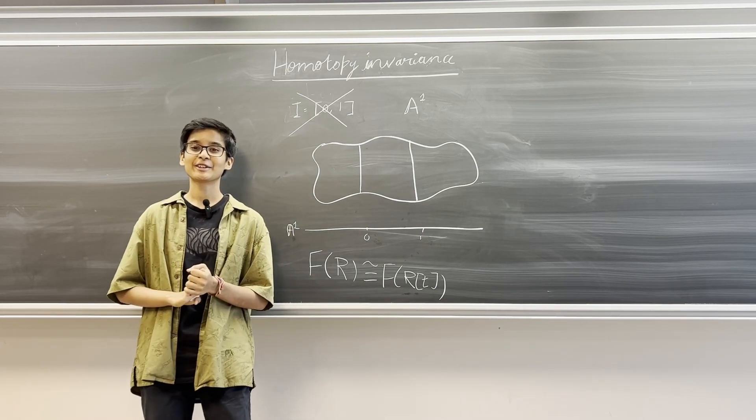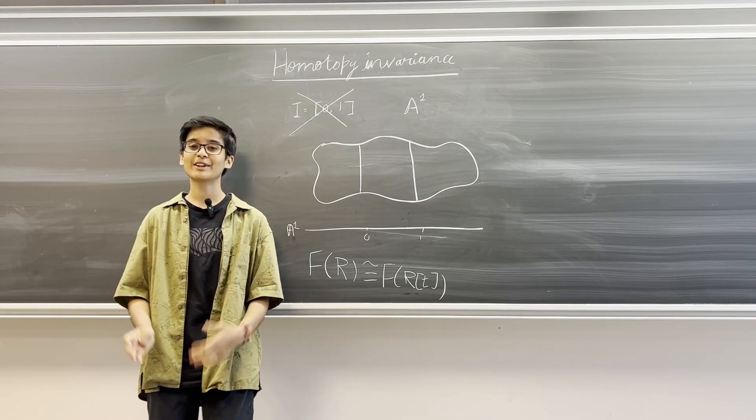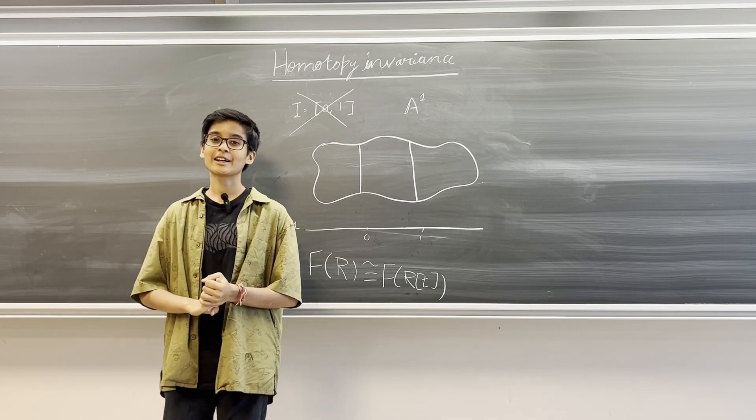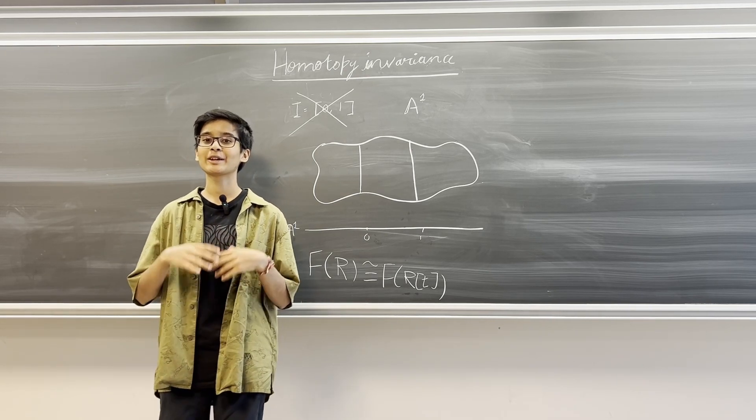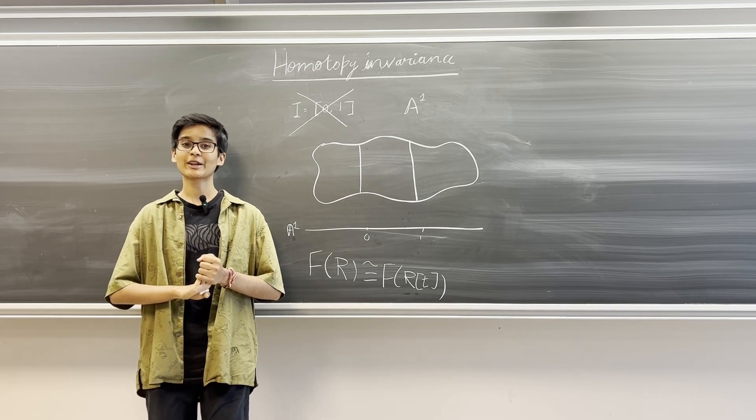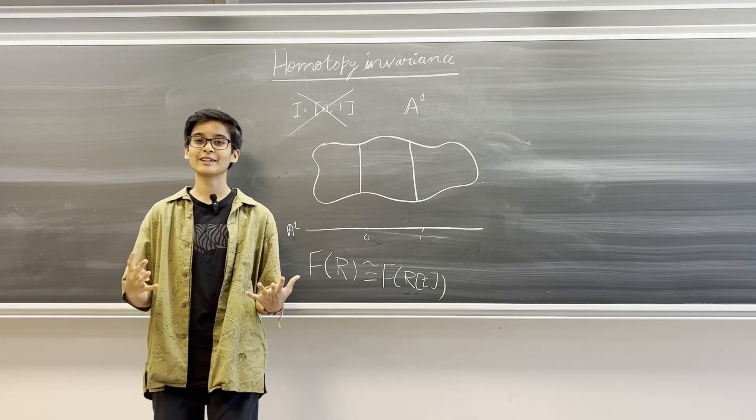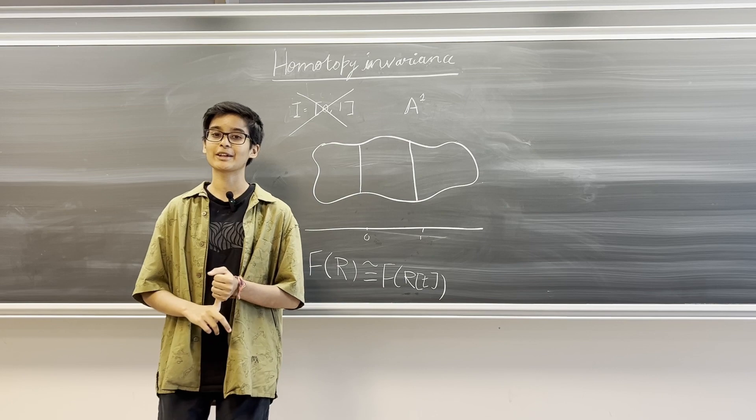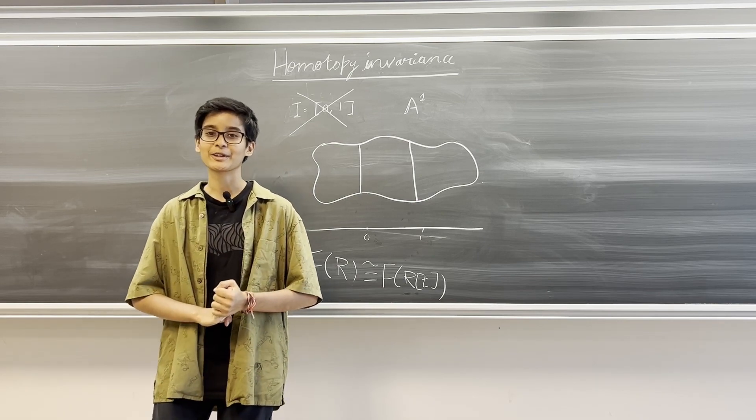In algebraic geometry, we know that we have a family of invariants known as Kₙ that to any commutative ring R provide us with the K groups of R, and so we might ask the question if K-theory in itself is A1 homotopy invariant. And this is what we'll now be talking about.